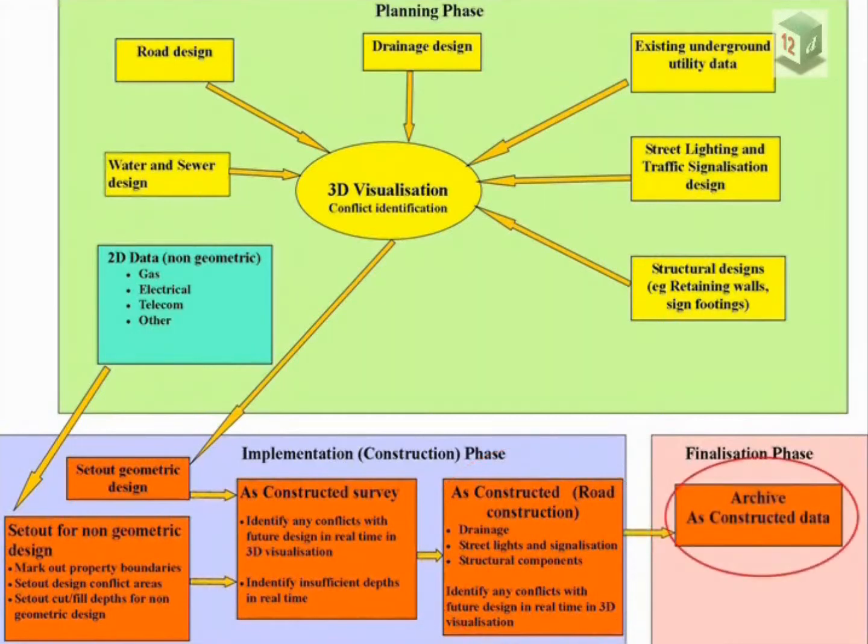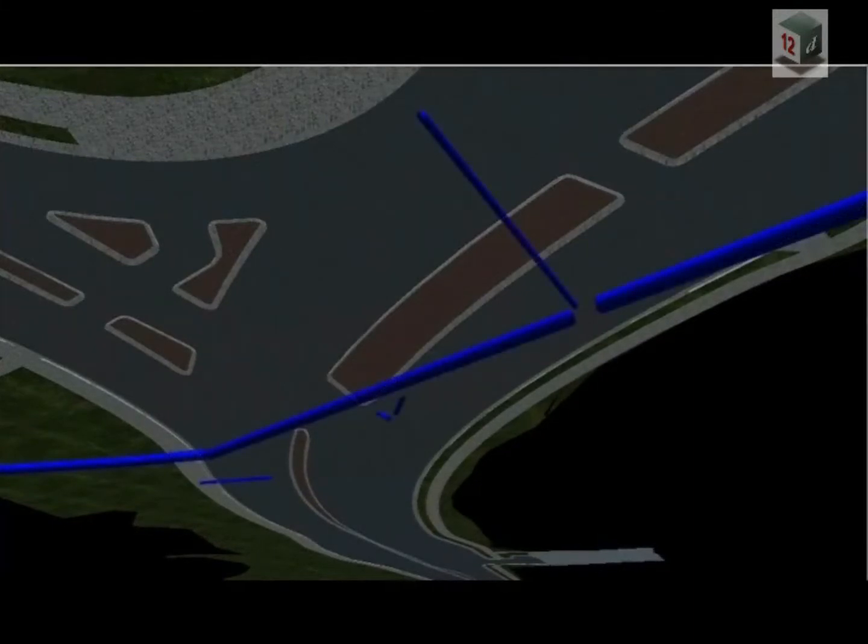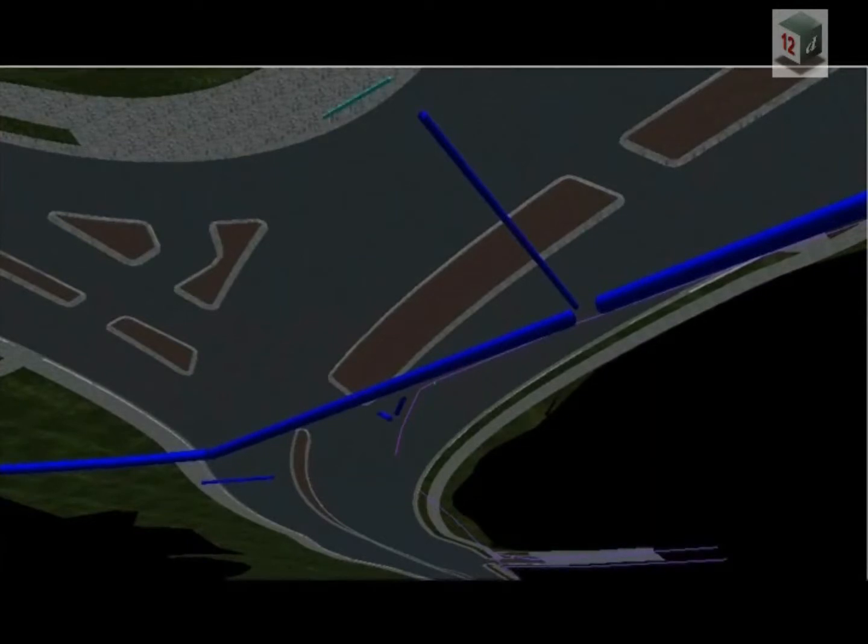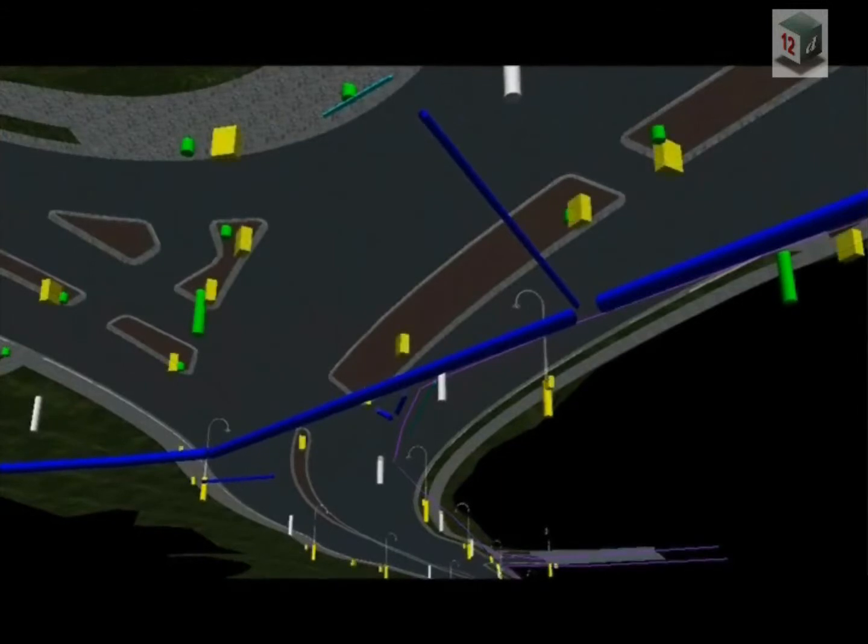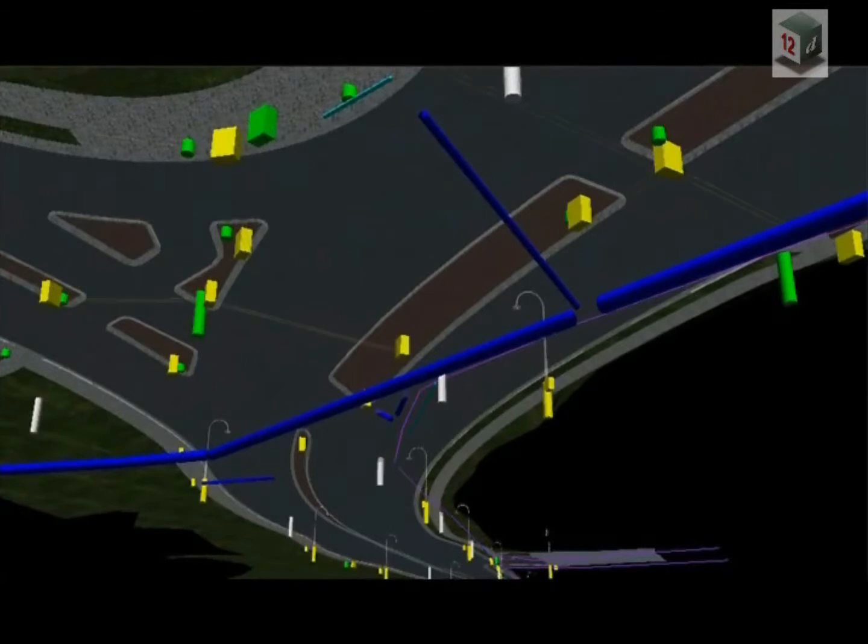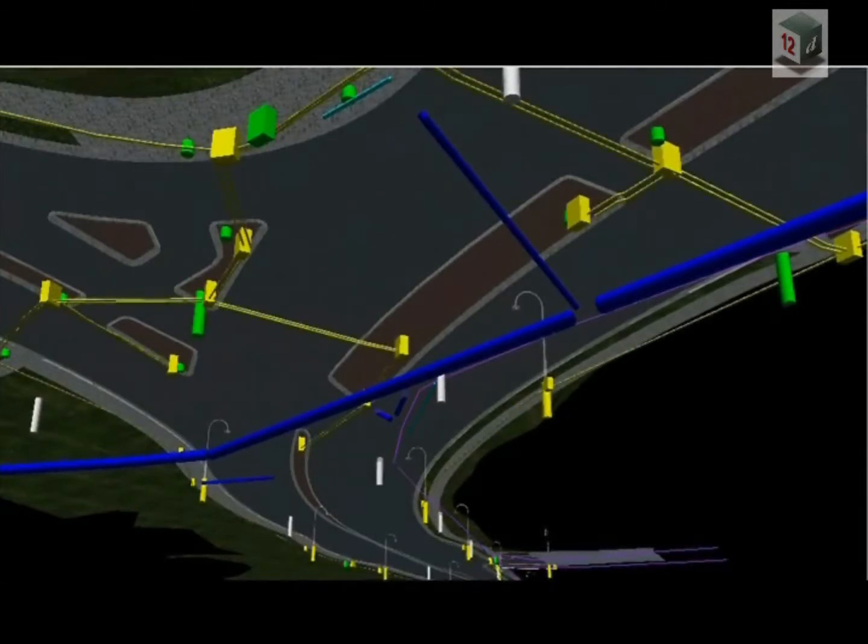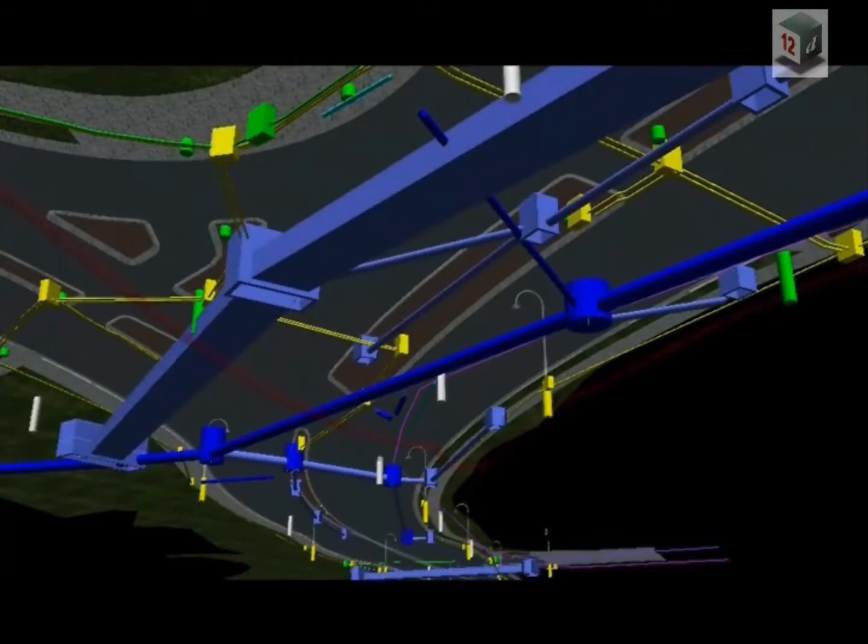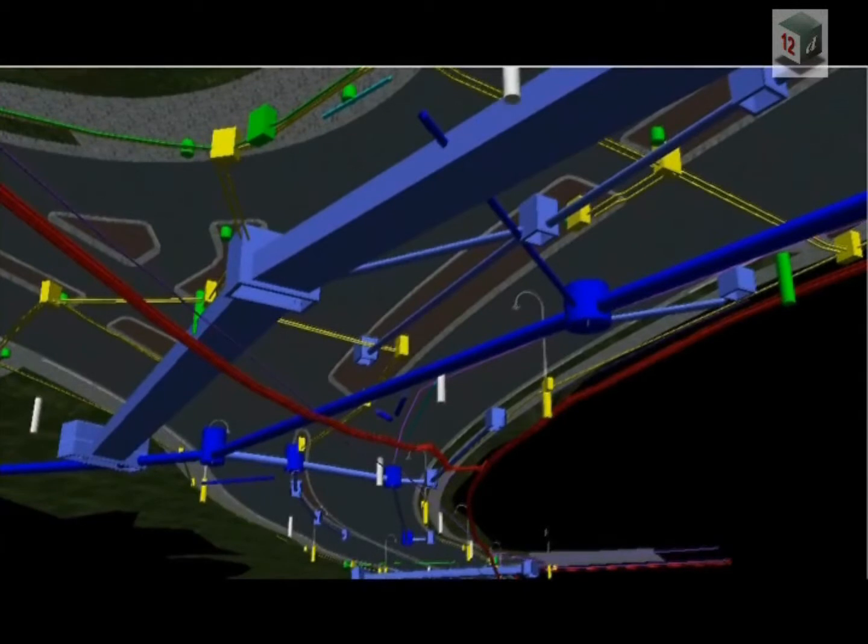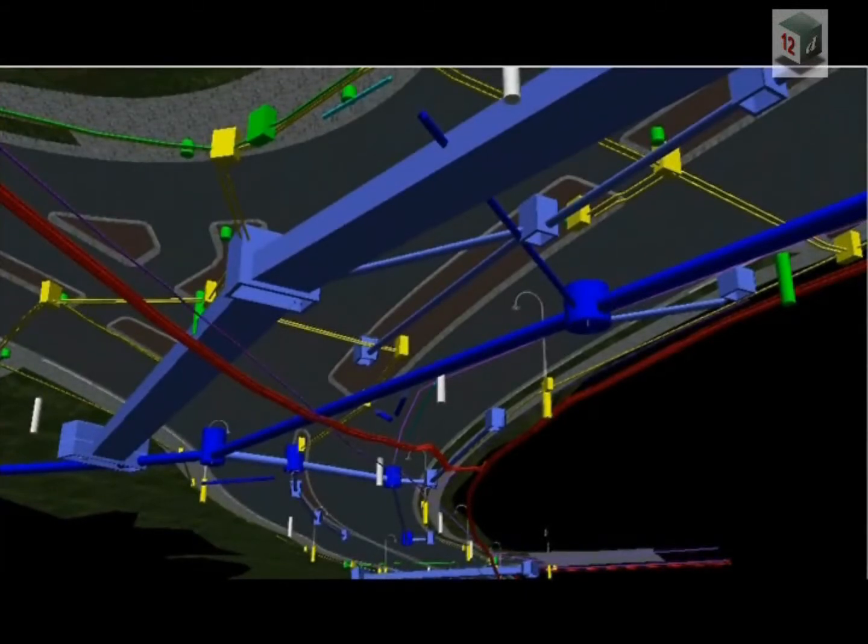In the finalization phase, all as constructed survey is archived. In this real example of Stage 3 of the Gold Coast Highway, we are looking underneath the design surface at the intersection of Marine Parade and Brisbane Road. It is now populated with all known existing drainage, existing telecom conduits, all existing power pole footings, design street light footings, design mast arm and traffic signalization footings, design street light electrical inspection boxes, design signalization communication inspection boxes, design street light electrical conduits, design traffic signalization communication conduits, design drainage, as constructed electrical conduits, as constructed telecom, and a partly constructed water main at the top left of the screen.